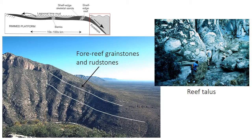Because reefs have a rigid framework that gets cemented and bound together on the seafloor, they can produce steep or even vertical fore-reef slopes at the edge of the carbonate platform. Their rigid structure also means that parts of the reef can break off as large, intact blocks and fall down the reef slope into deeper parts of the basin. As a result, fore-reef deposits are often quite coarse-grained despite their deepwater setting, and may contain disorganized breccias of large blocks of reef talus.